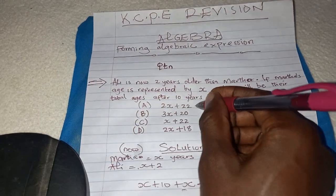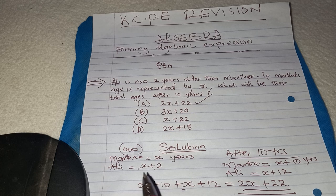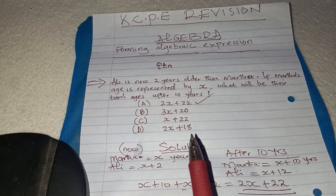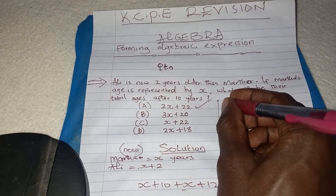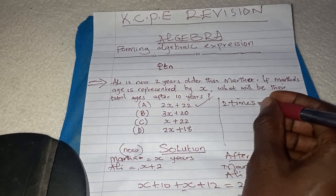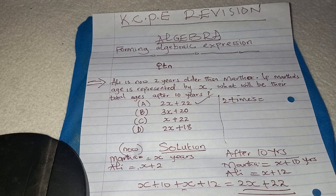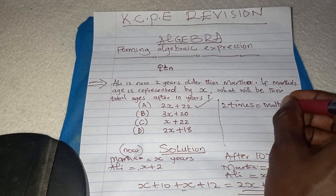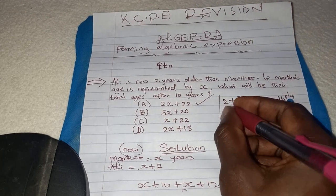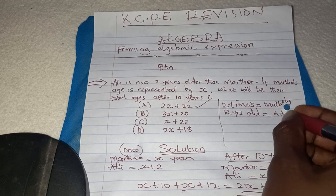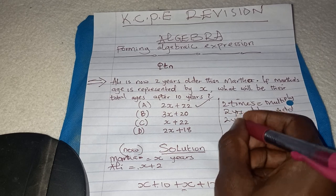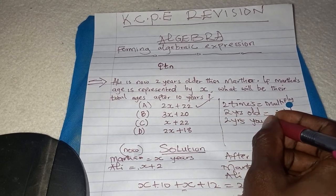So our answer is choice A. When working out questions to do with algebra, always transform or change the statement into a mathematical operation. Start by listing the people involved. It is important to note: if someone is 2X, 3X, or 4X the age of another person, you multiply. But if you are told he is 2 years older, you add. If he is 2 years younger, you subtract.